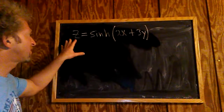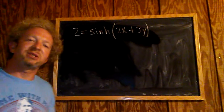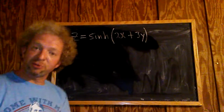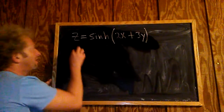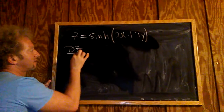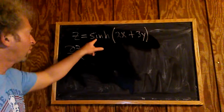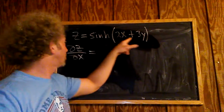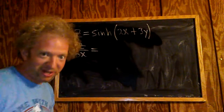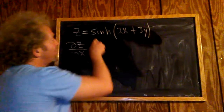We're going to find the partial derivatives of this function with respect to x and y. So first we're going to compute the partial derivative with respect to x — del z del x. We simply treat y as a constant here, so we're taking the derivative only with respect to x. That's how you take the partial with respect to x.